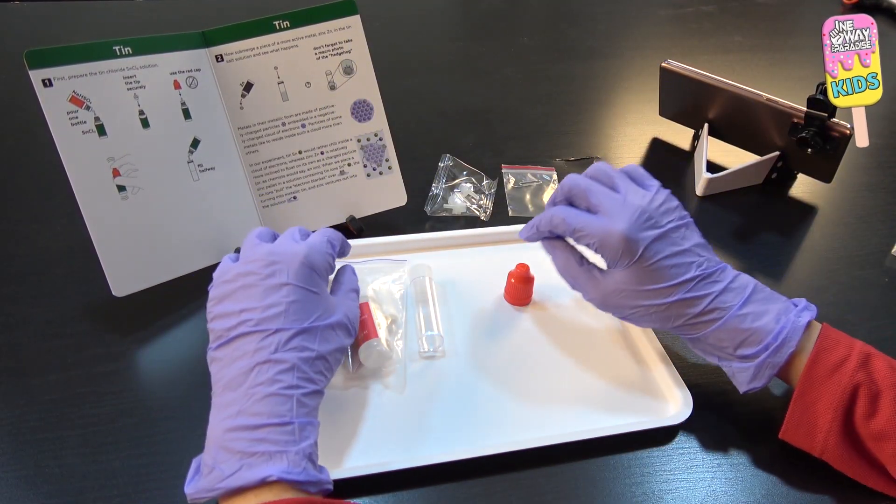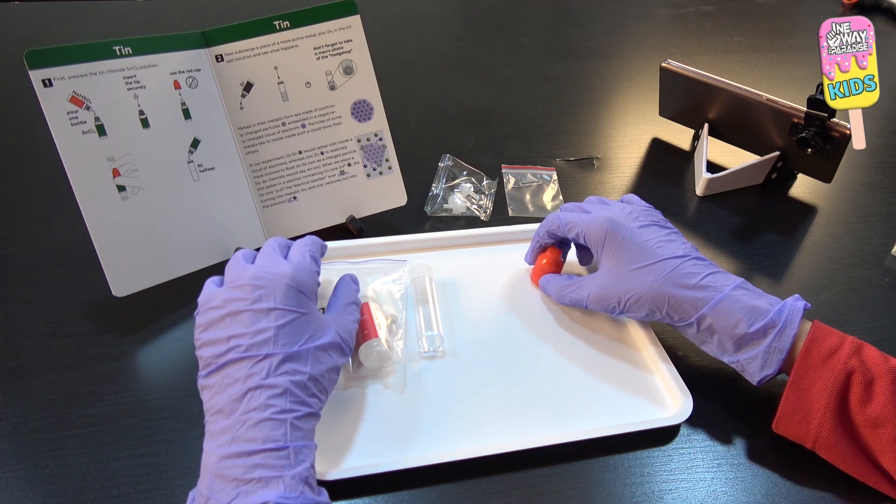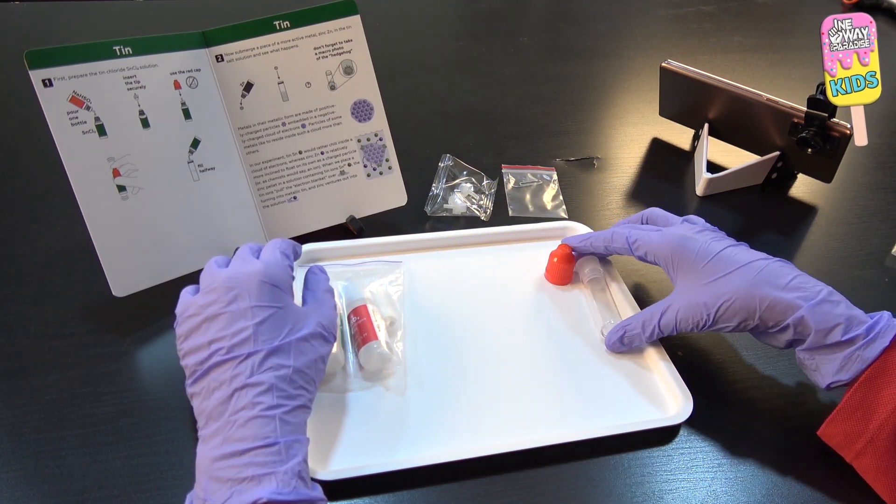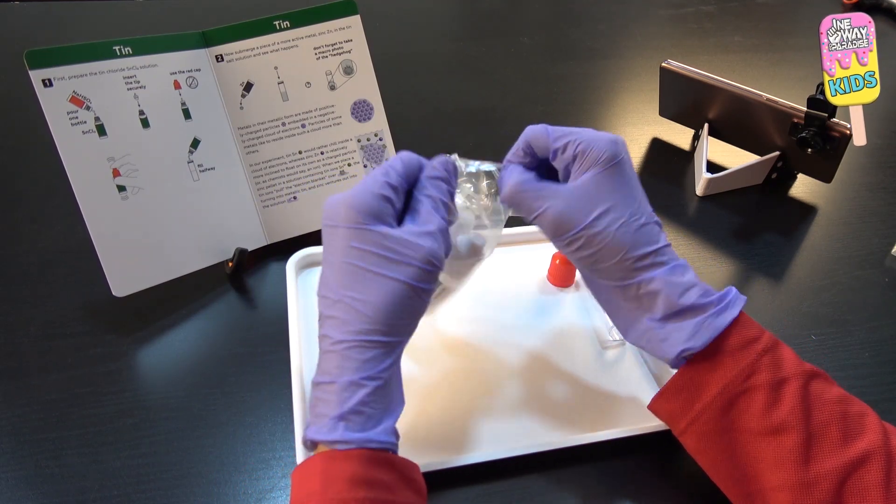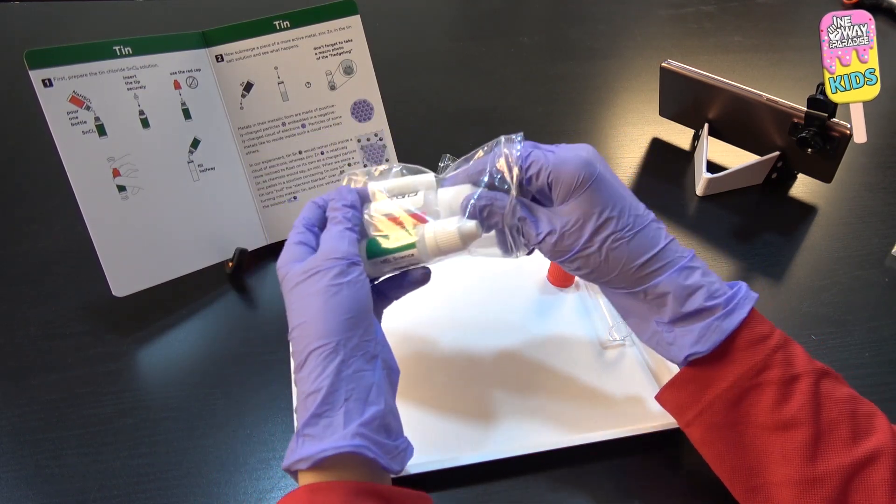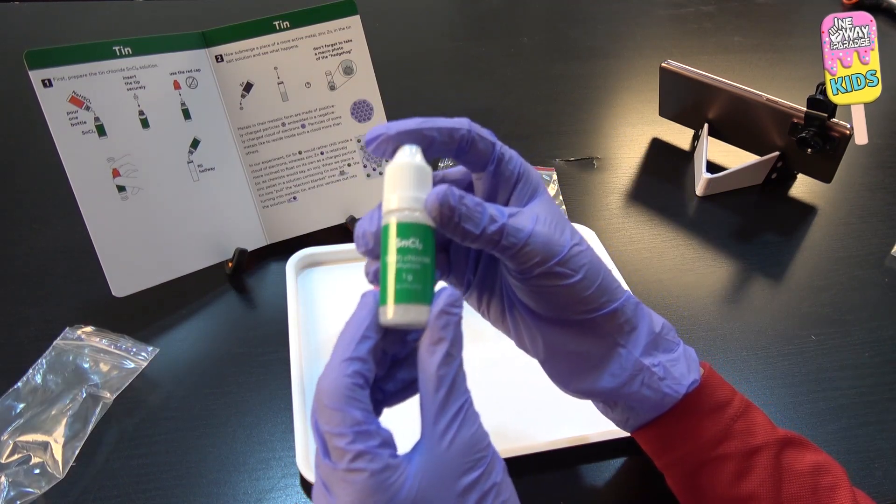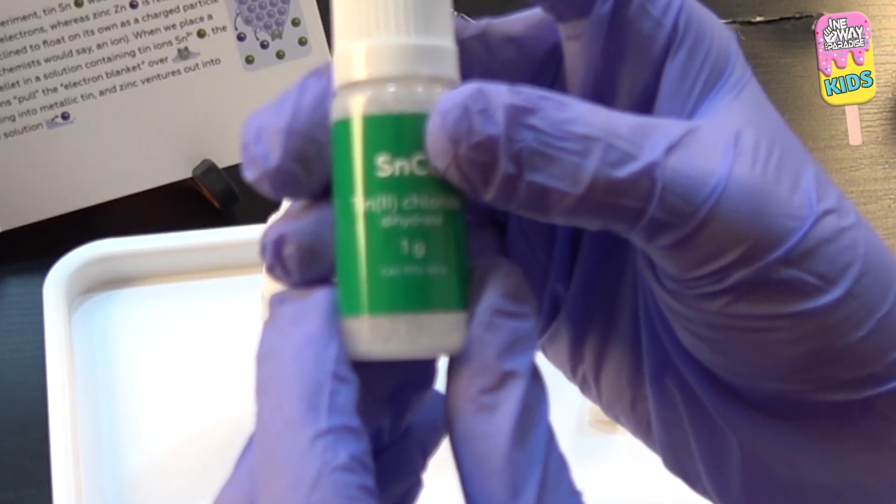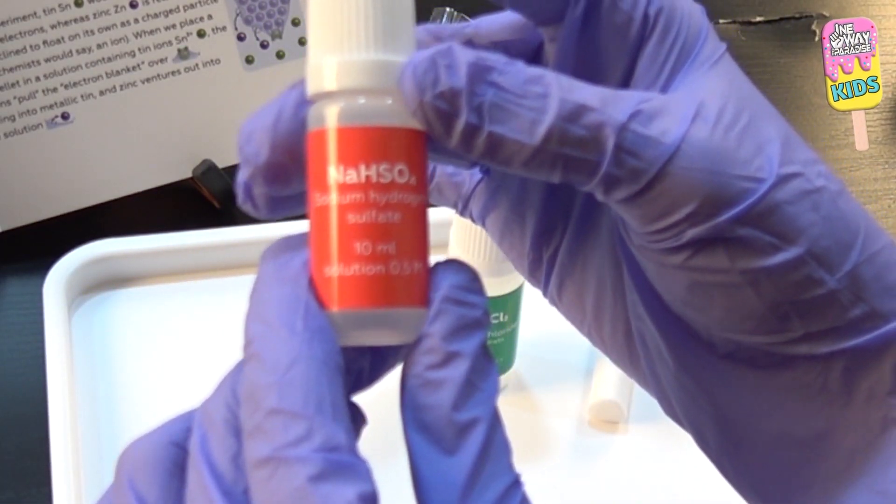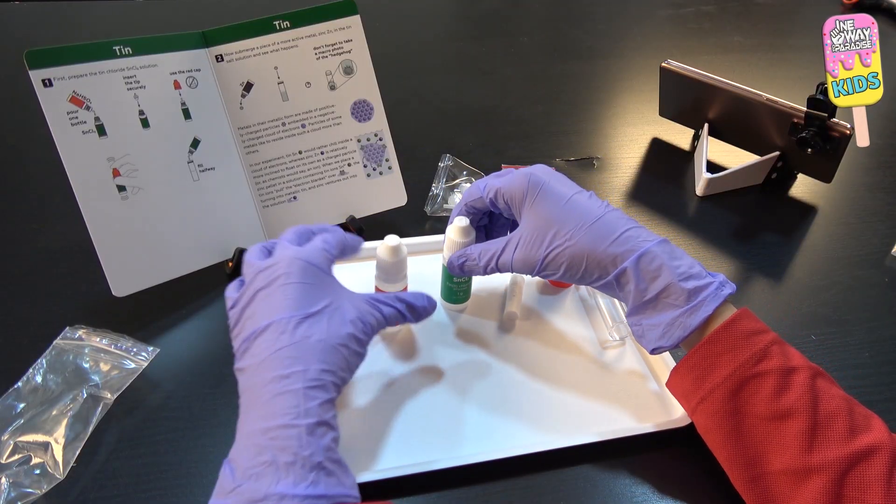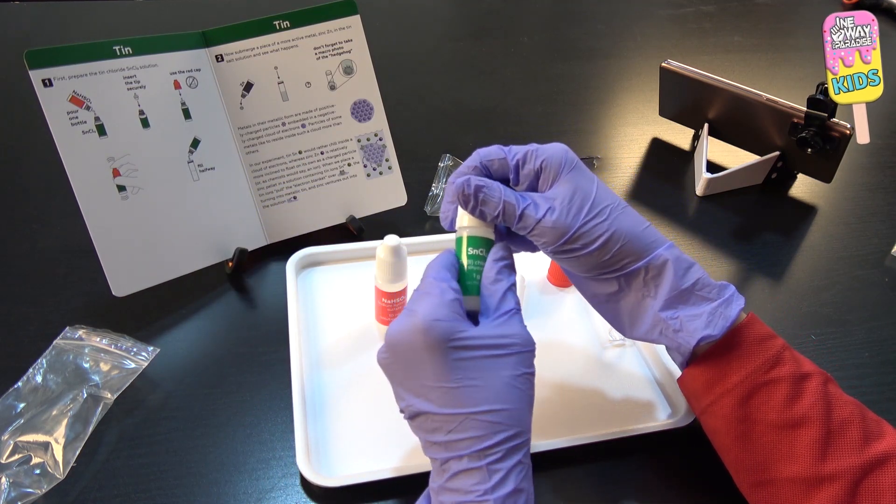Okay, so first we will prepare the tin chloride solution. I'll first take these out. So this is the tin chloride and this is the sodium hydrogen sulfate. We'll first open this tin chloride.